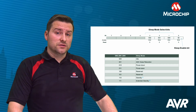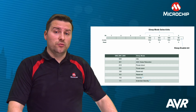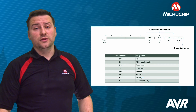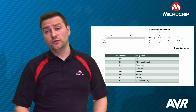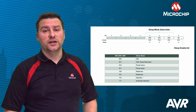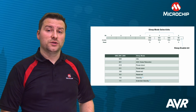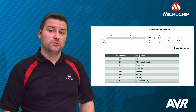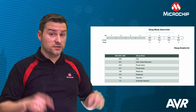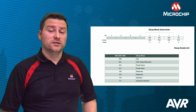To trigger a chosen sleep mode, the sleep enable and sleep mode select bits must be written in the sleep mode control register. The AVR toolchain provides an API to support users when configuring sleep modes. The example project linked in the description box shows how this is done.